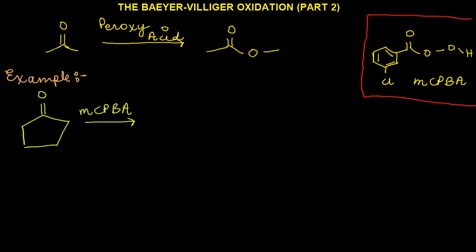In the last video, we talked about the Baeyer-Villiger oxidation, where we could convert our ketone into an ester using a peroxy acid. There are two ways to look at this reaction. One is that through the course of the reaction, you've inserted an oxygen between your carbonyl carbon and the alpha carbon of your starting ketone. Another way to look at it is that the alpha carbon of the ketone migrated over to the oxygen.